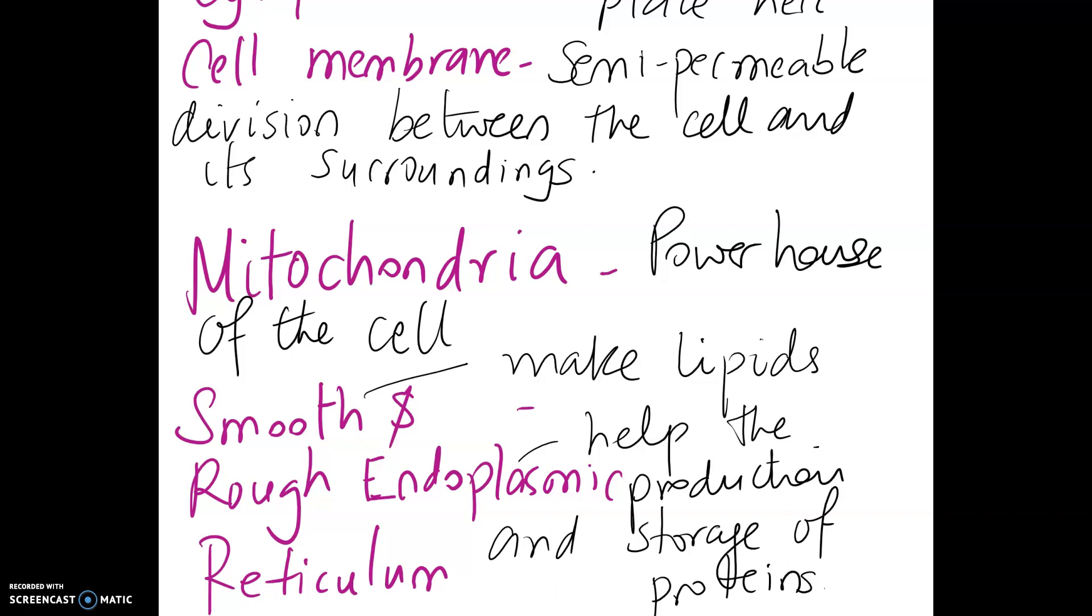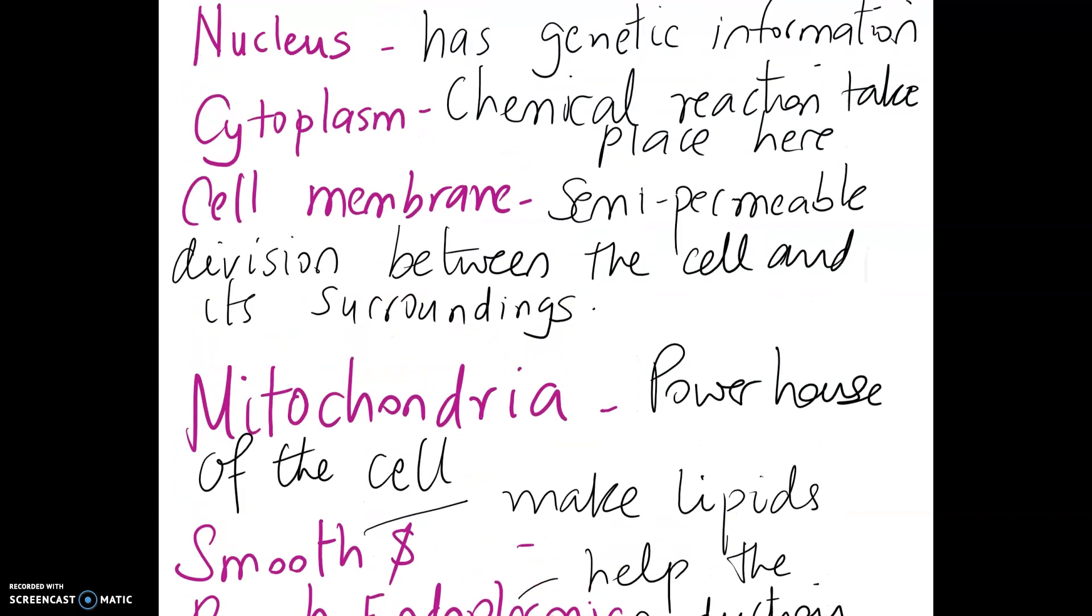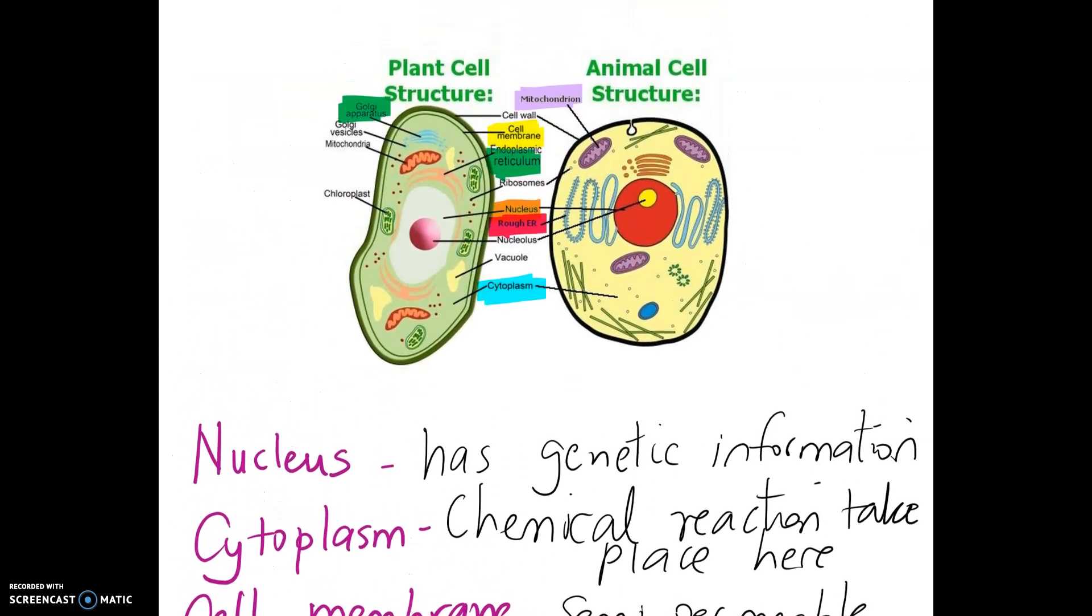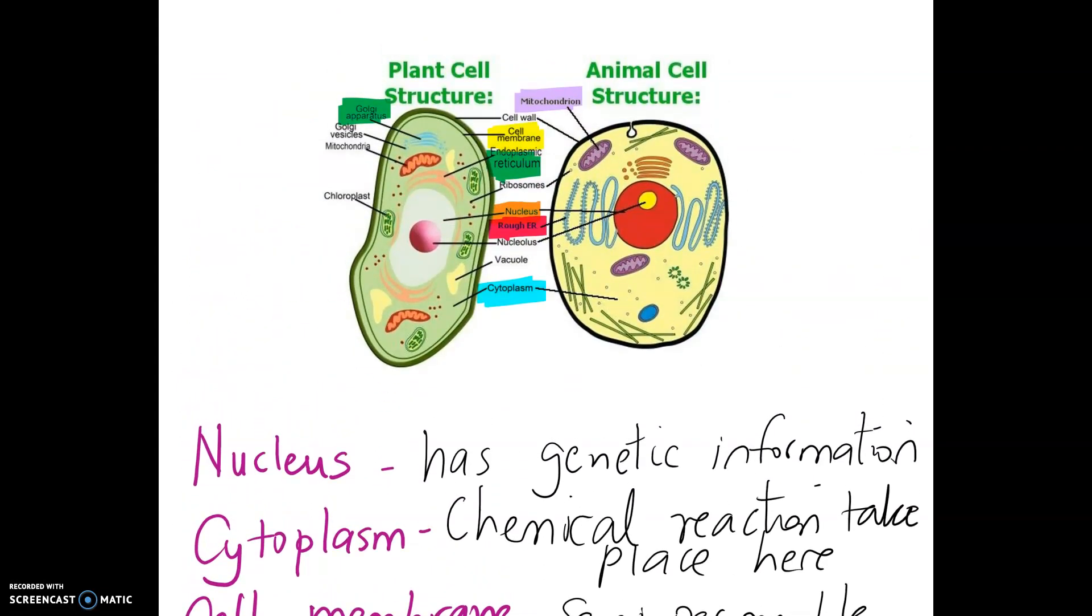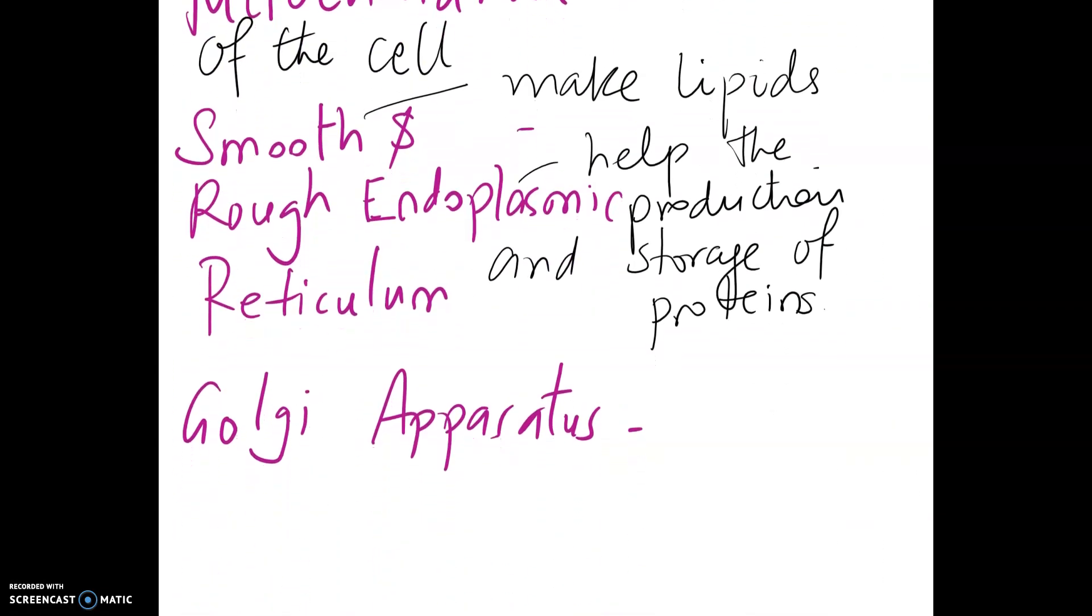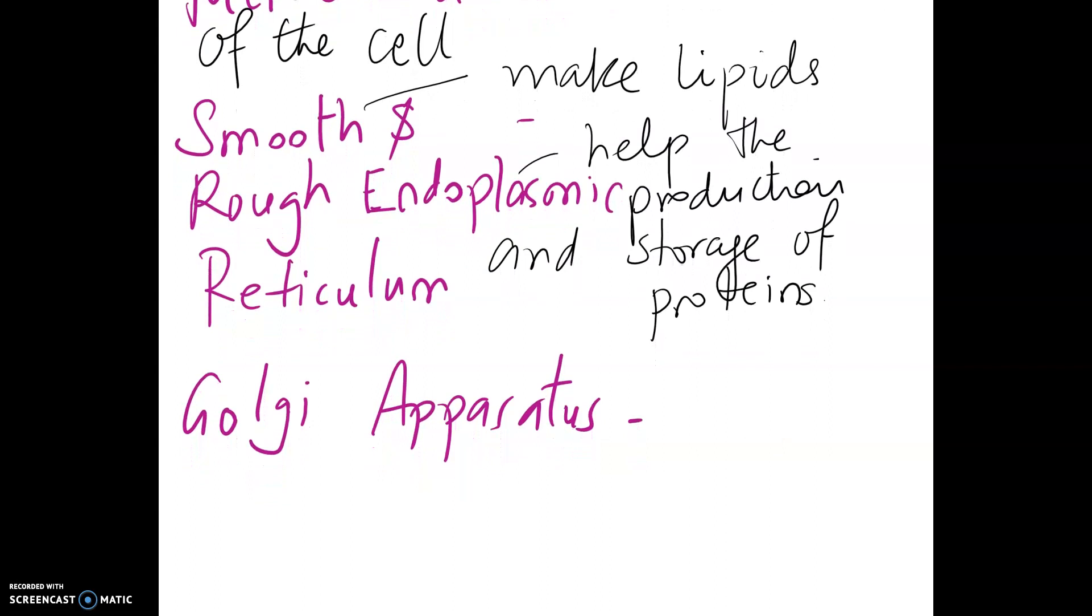Now the final structure we want to look for similarities, which is here highlighted in green, is the Golgi apparatus. The Golgi apparatus is where it modifies the protein. Okay so this is all the similarity between an animal and plant cell.